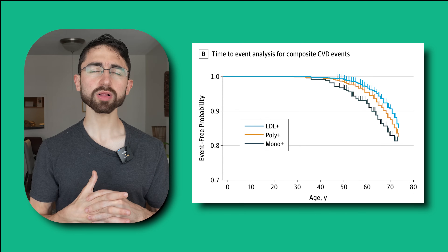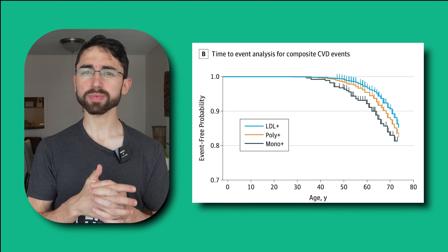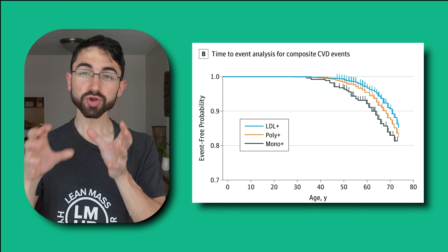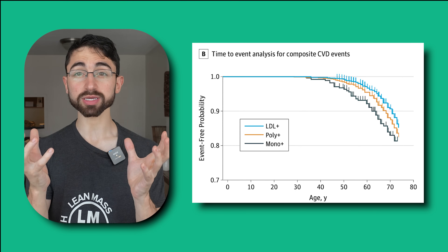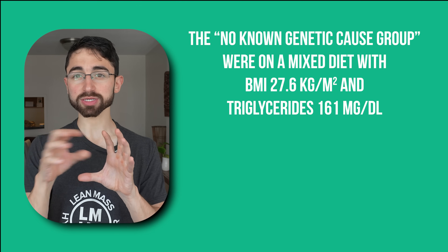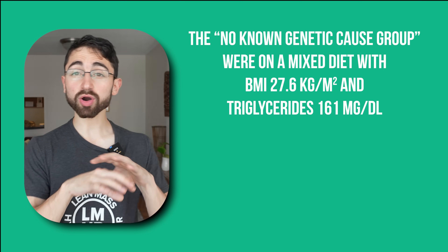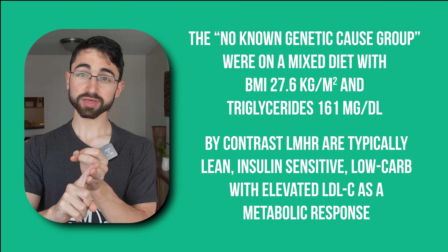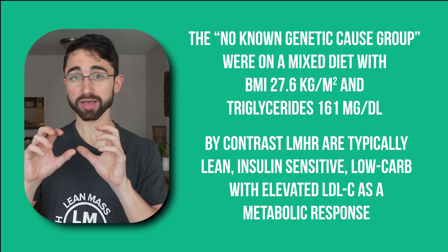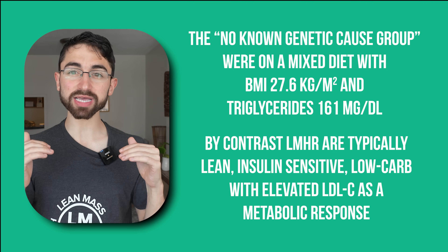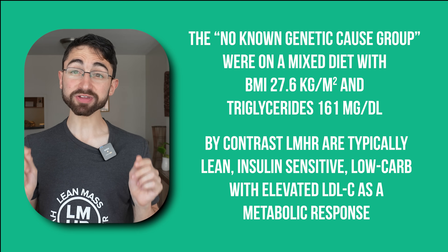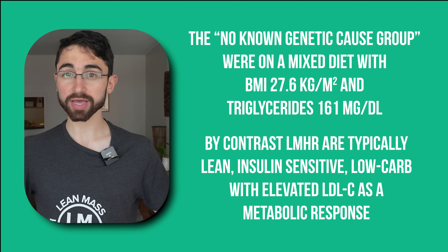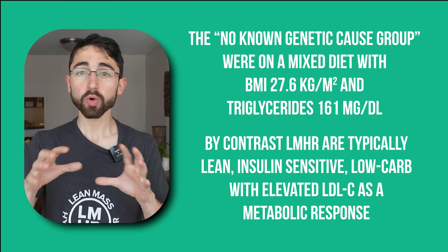What about the lean mass hyper-responder patient? Upon first thought, you might think we can bucket them with the no-known-genetic-cause group. But this wouldn't be appropriate either, because they're distinct from that group. The no-known-genetic-cause group in the general population broadly constitutes people who generally have signs of metabolic syndrome — maybe elevated triglycerides — and are on a mixed diet. Whereas the lean mass hyper-responder people tend to be very insulin sensitive, very healthy other than maybe their high ApoB, and they're having this massive jump in LDL and ApoB as part of an adaptive metabolic response to carbohydrate restriction to meet energy demands of their muscle tissue and replenish their fat tissue. We're increasing fat fuel flux.